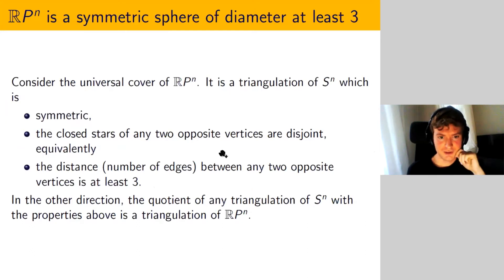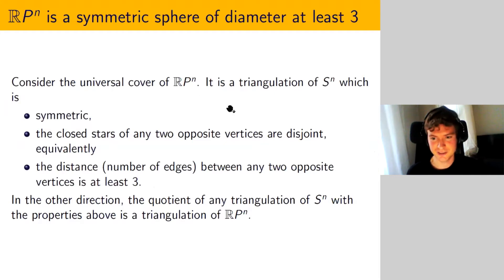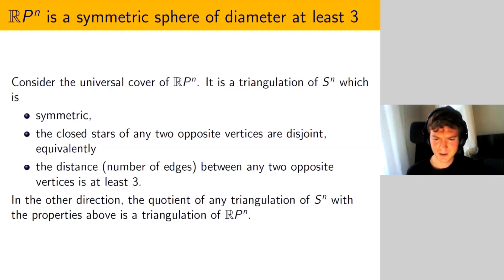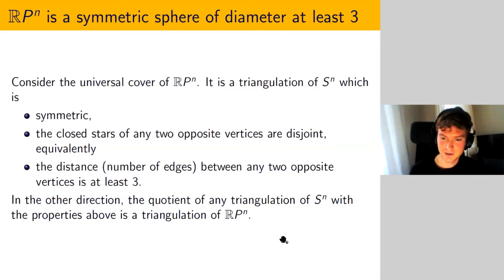If we have a triangulated RP^n, we can pass to its universal cover, which will be a triangulated sphere S^n. This sphere must be symmetric, and the closed stars of any two opposite vertices must be disjoint — equivalent to saying the distance between any two opposite vertices is at least three, where distance means the minimum number of edges needed to travel between them. Conversely, a symmetric triangulation of S^n satisfying these properties gives a triangulation of RP^n.